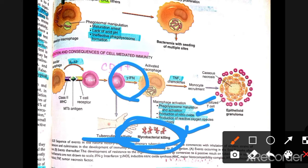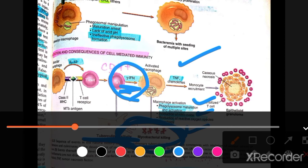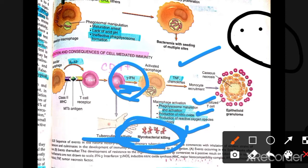Activated macrophages produce nitric oxide and reactive oxygen species — also called nitrogen oxygen species or free radicals — which can kill the bacteria. Tumor necrosis factor is also released, recruiting monocytes. These activated macrophages transform into epithelioid giant cells.